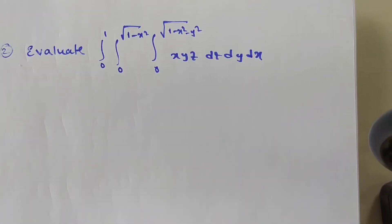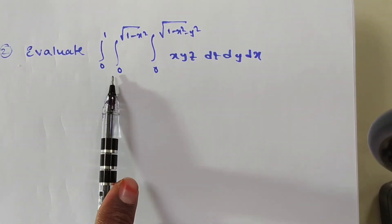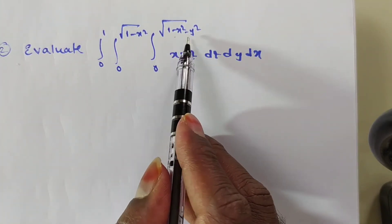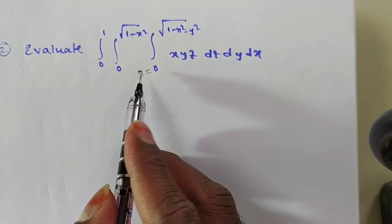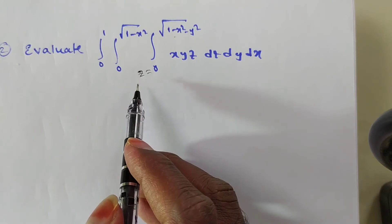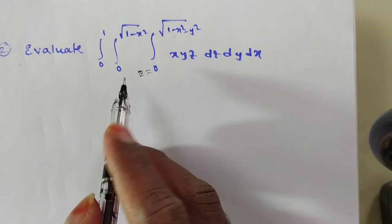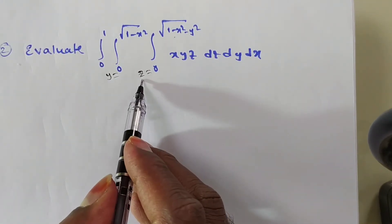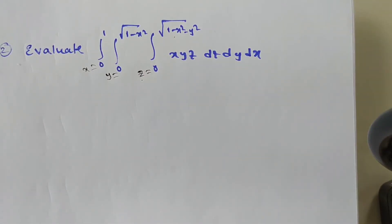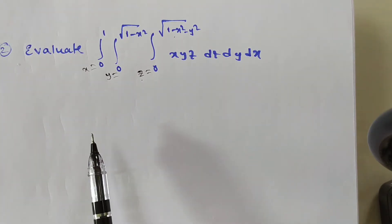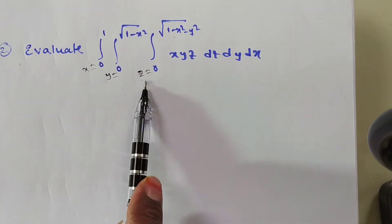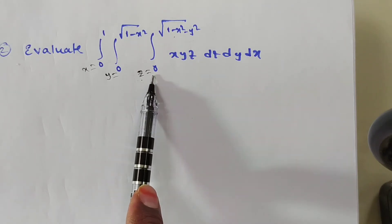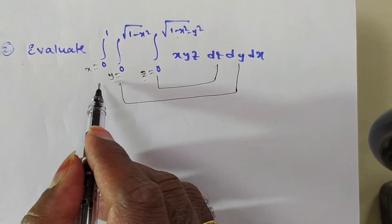Now coming to the second problem: integral 0 to 1, integral 0 to square root of 1 minus x squared, integral 0 to square root of 1 minus x squared minus y squared. The last limit is a function of x and y, so obviously these are the limits for z. Now remaining limits for x and y: the limit root(1 minus x squared) is a function of x, so it is the limit for y. The remaining 0 to 1 is the x limit. Since z depends on two variables, integrate with respect to z first, then y, then x.